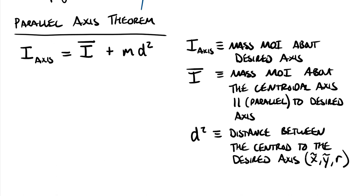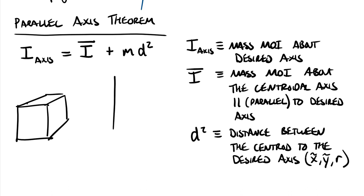To illustrate: say we have a cube as our shape and want to find the moment of inertia about the Y-axis. Our D value is the distance from the Y-axis over to the centroid G of that mass. The centroidal axis we reference is Y-prime — parallel to Y and passing through the centroid. If you can find the moment of inertia for this shape about Y-prime, you can transfer it over to the Y-axis using the parallel axis theorem.